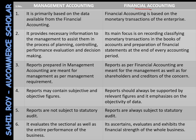As you can see on the right hand side, management accounting is done on the basis of data received from financial accounting. Financial accounting is based on the monetary transactions of the enterprise — meaning any monetary transaction happening within the organization forms the basis of financial accounting, and on that basis, management accounting is performed. That was the first difference.